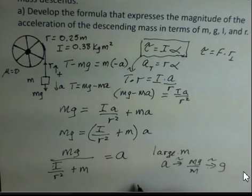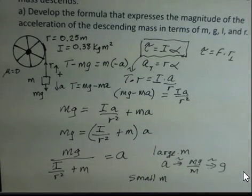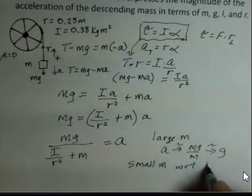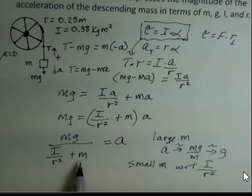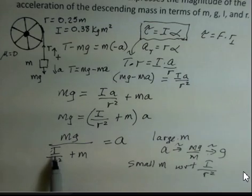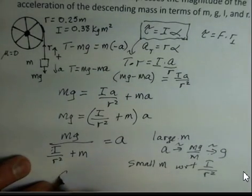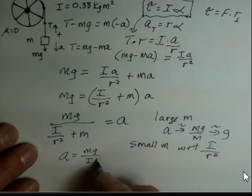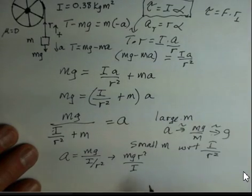What about if the mass is very small? With small m with respect to the i over r squared, I'm going to be dropping off this m in the denominator. So for the case of a small mass and a good sized i divided by r squared term, we can simplify this and have that the acceleration is equal to mg divided by i over r squared or mg r squared over i, if I invert and multiply this fraction.